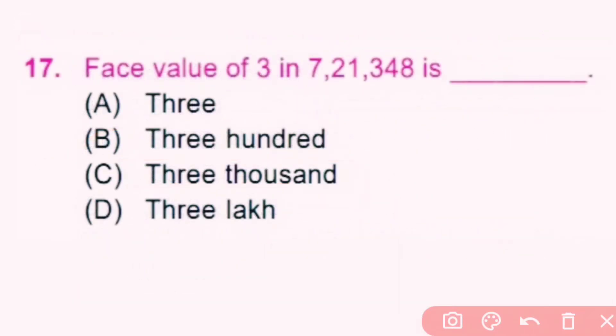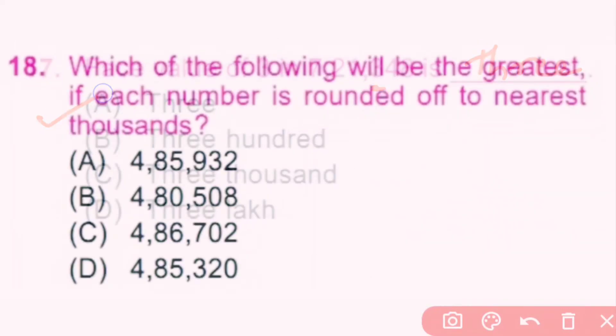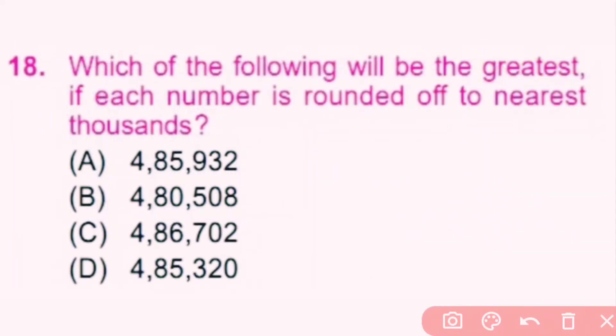Question number 17. The face value of 3 in 7,21,348 is dash. The face value of a number is the number itself, so the face value of 3 in this number is 3. A is the correct answer.